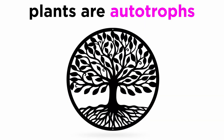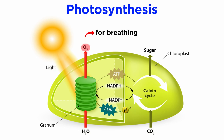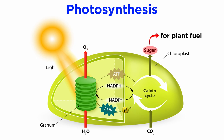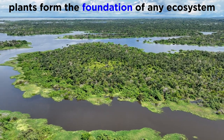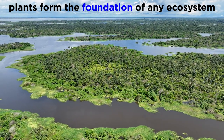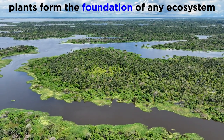Plants are autotrophs. This means they produce their own food. They do this using the process of photosynthesis to transform water, sunlight, and carbon dioxide into oxygen, which other organisms like us humans can breathe, and also simple sugars that the plant uses as fuel. It is these primary producers — plants — that form the base or foundation of an ecosystem and fuel the next trophic levels.